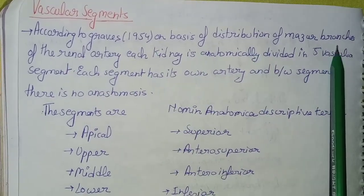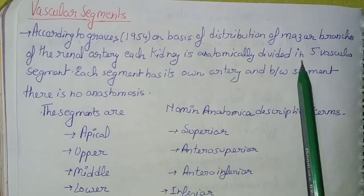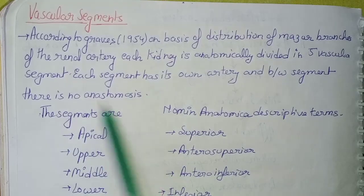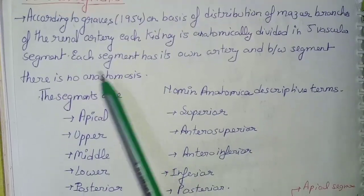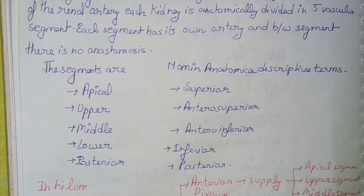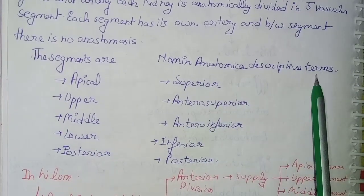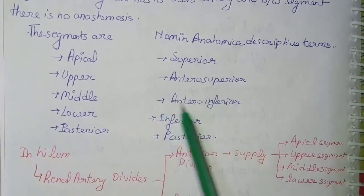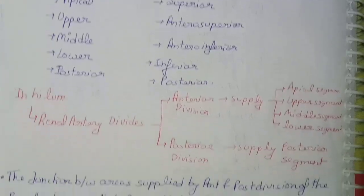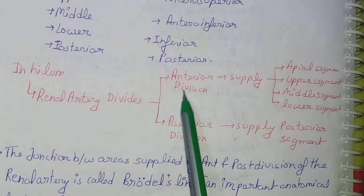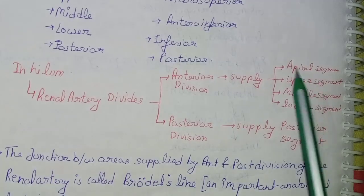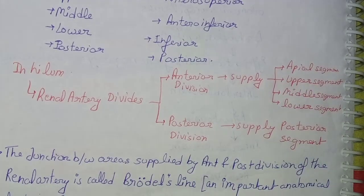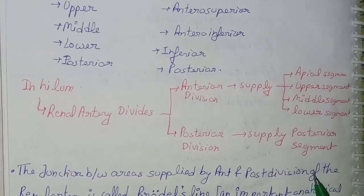Coming to the vascular segments of the kidney: according to Graves (1954), on the basis of distribution of major branches of the renal artery, each kidney is anatomically divided into five vascular segments. Each segment has its own artery and there is no anastomosis between segments. The segments are: apical, upper, middle, lower, and posterior. The descriptive terms in Nomina Anatomica are: superior, anterior superior, anterior inferior, inferior, and posterior. In the hilum, the anterior division supplies the apical, upper, middle, and lower segments; the posterior division supplies the posterior segment.